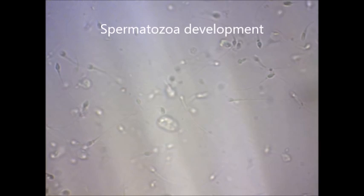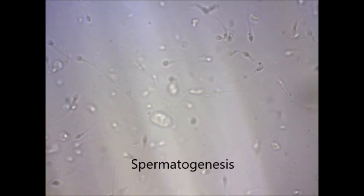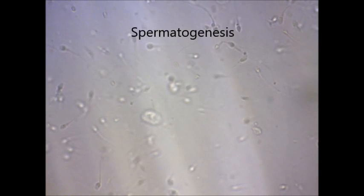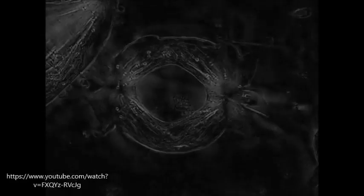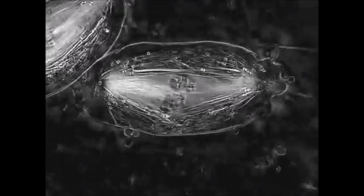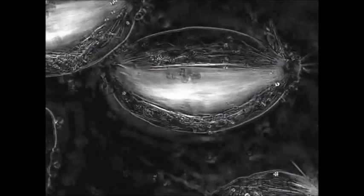Spermatozoa cell development initializes with spermatogenesis, a synthesis of sperm which involves a meiosis phase of the gamete. At this initial phase of development, spermatozoa are integrated with the basic male germ cells, the somatic cells, through both meiosis and mitosis phases.